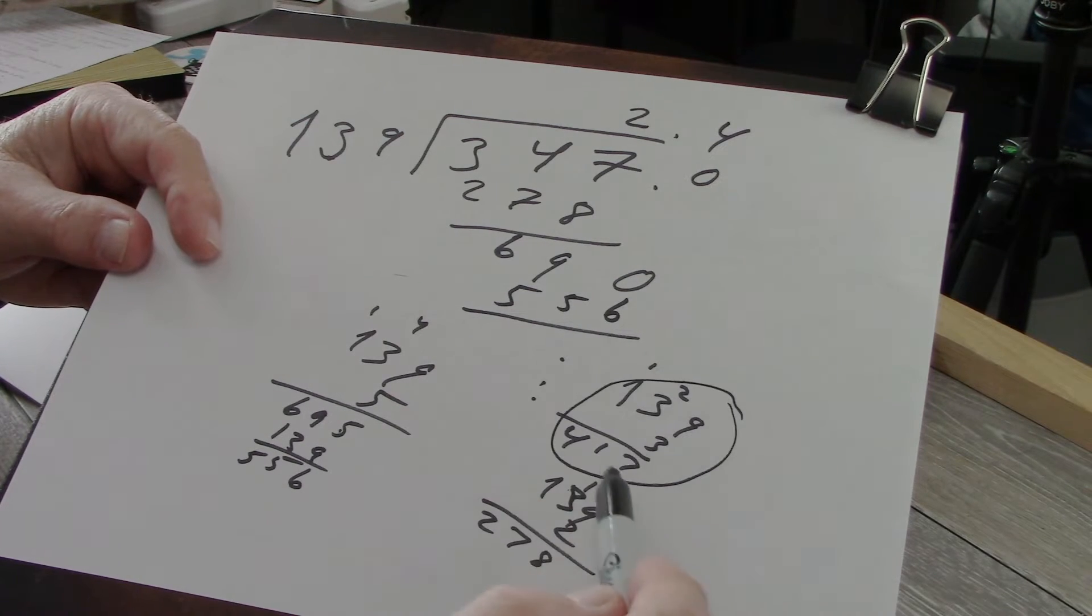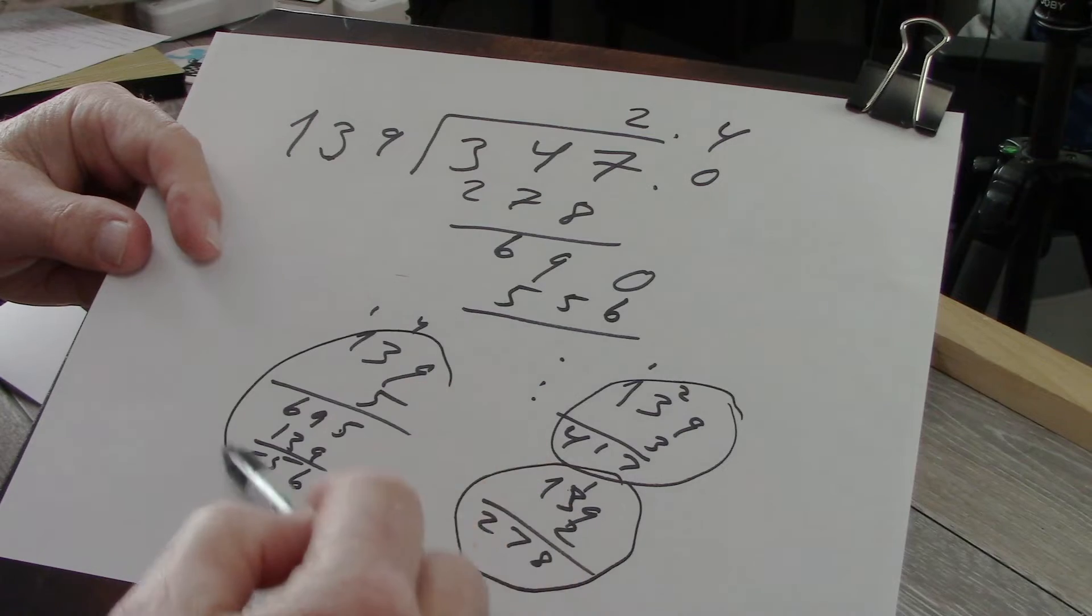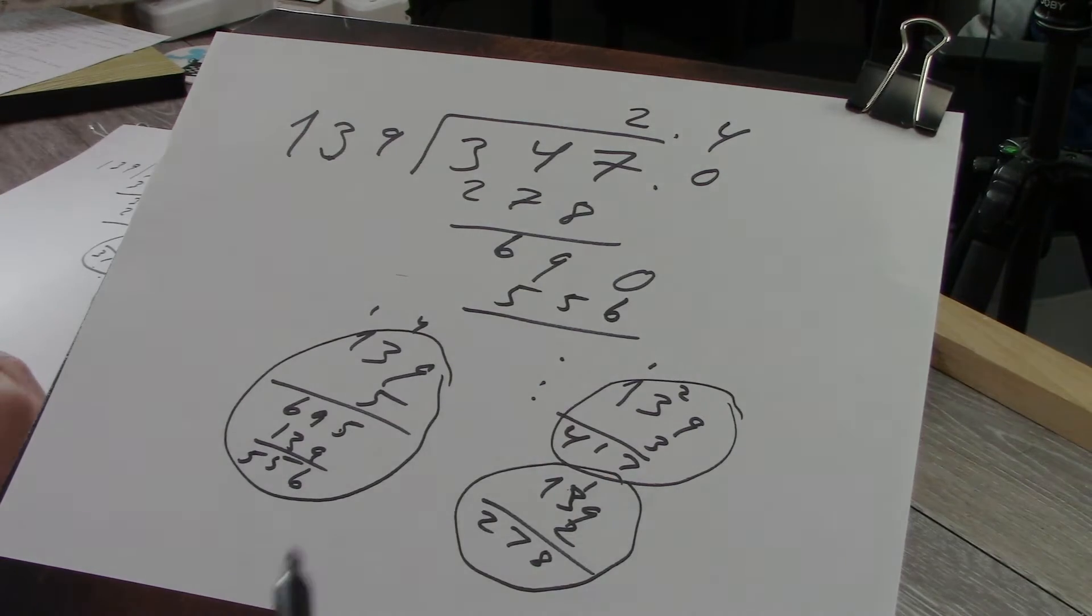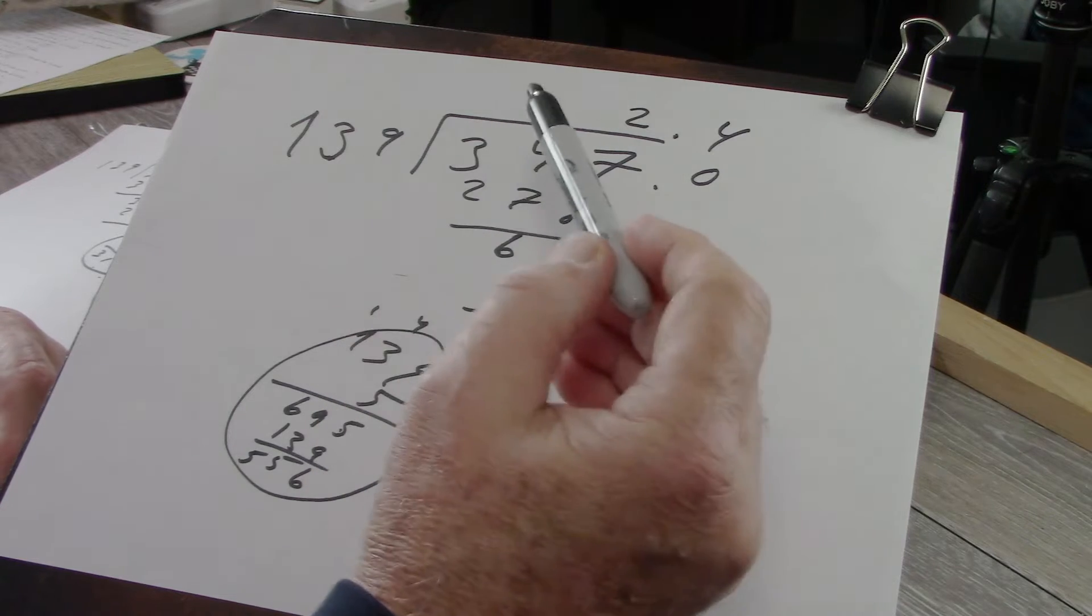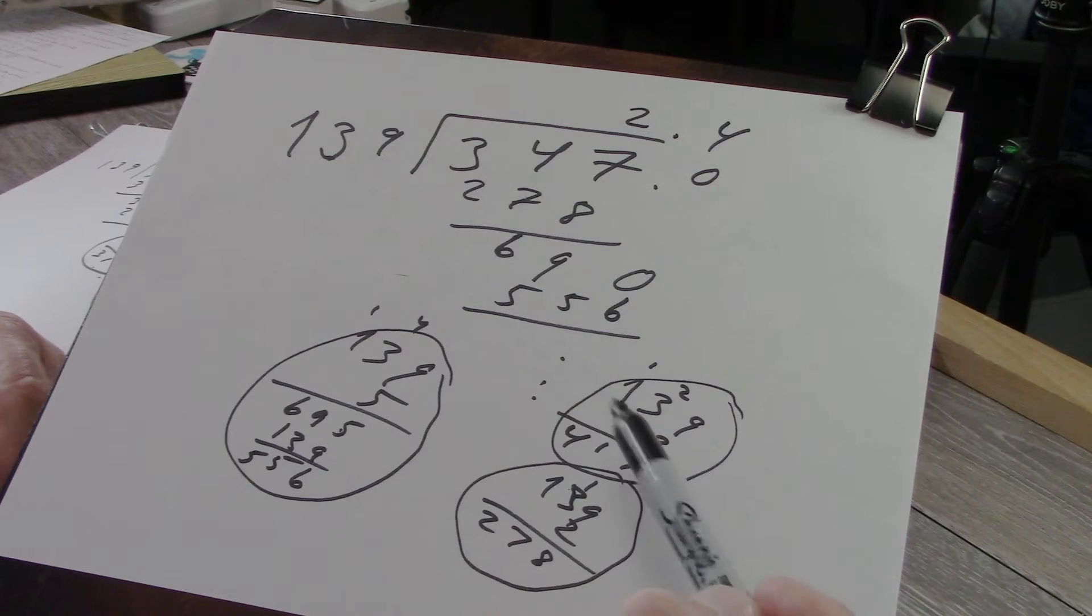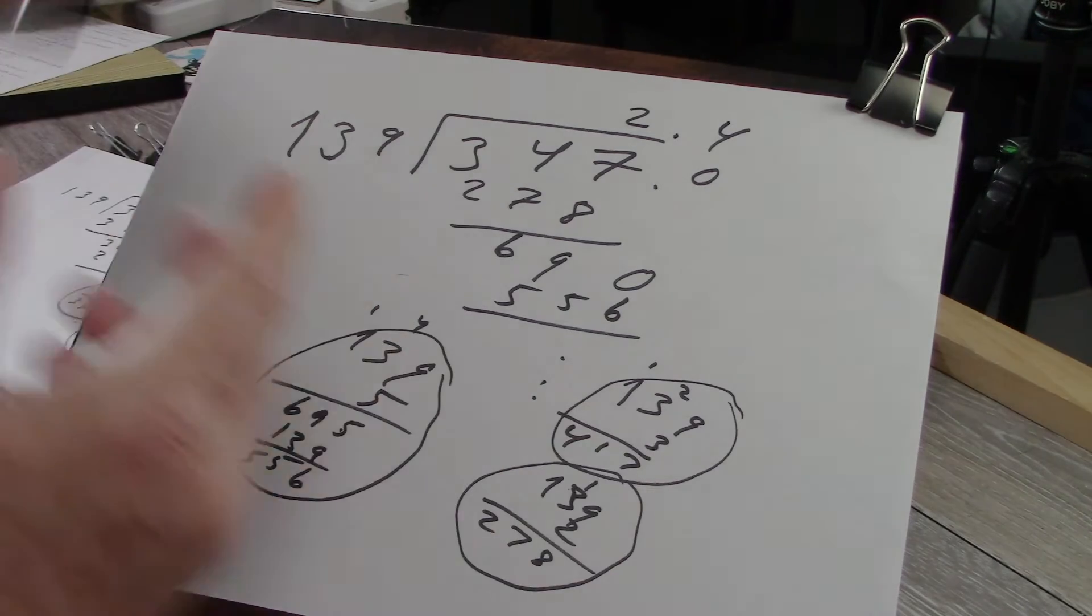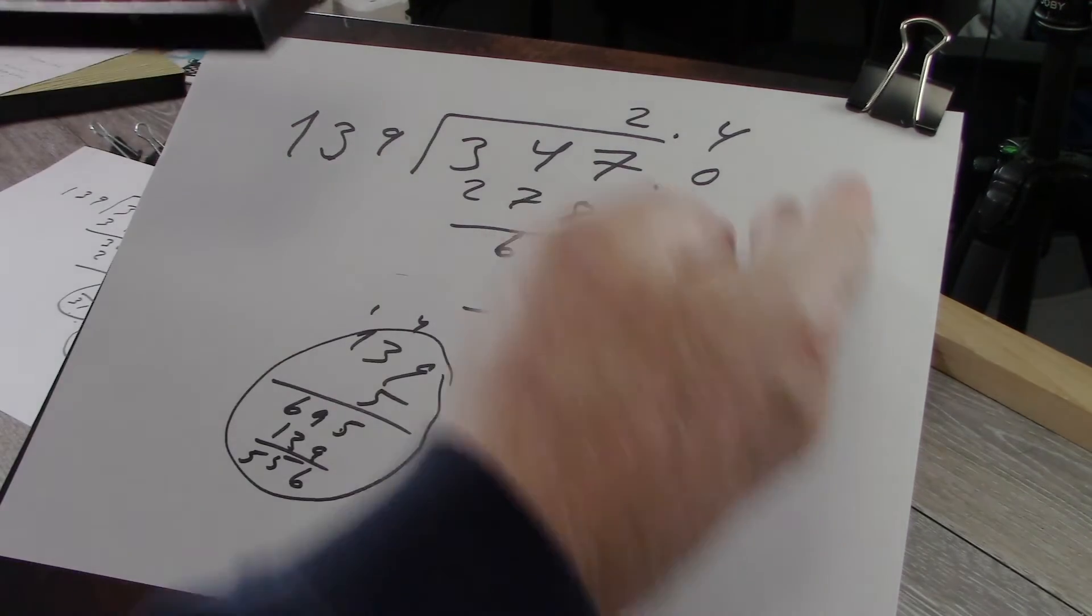So the problem you can see is you have all these sidebar multiplications that you have to do in order to figure out how many times the divisor goes into the dividend. You have to do all of these side multiplications, which you can do on paper. Not a big problem. It just takes up more paper.